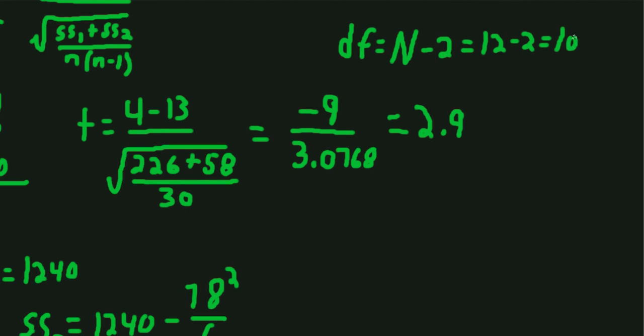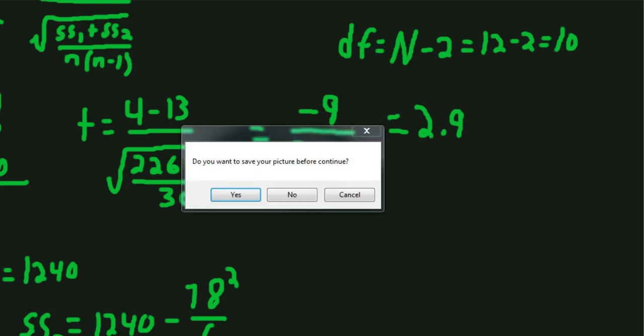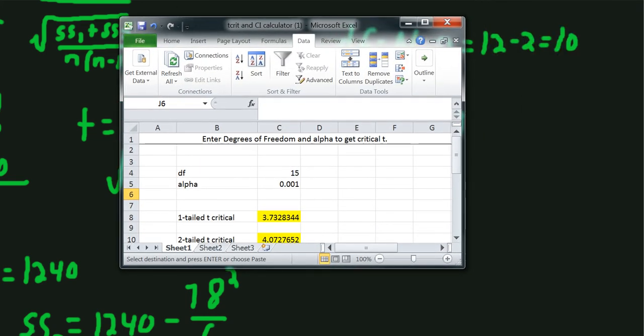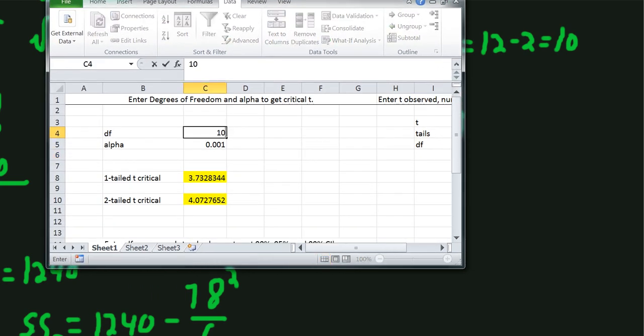So we'll need to look up what is the T-critical value that we need to achieve. Let's say we're using alpha .05, alpha .05 two-tailed. We'll need to look it up in a table or an online calculator. We have degrees of freedom 10, then we'll put alpha .05, and for two-tailed, we needed to get to 2.22 in order to reject the null hypothesis.